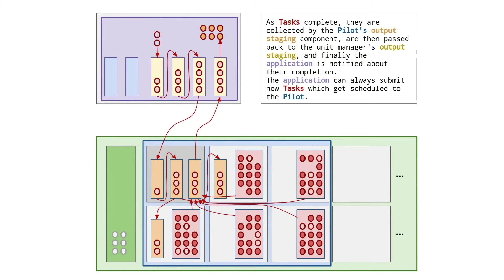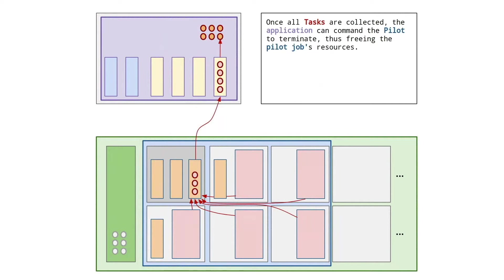Another feature of the pilot system is that you can swap tasks in and out during runtime. Once tasks begin to finish on your allocation, you can report back to the application on your laptop or login node, which can then decide to submit new tasks — new simulations — to the pilot job, which will run them as soon as it finds free resources. And once everything is done, the tasks are collected and reported back to the application side.